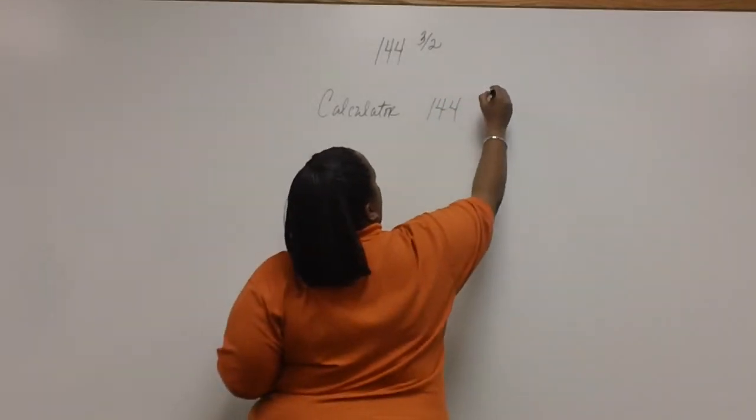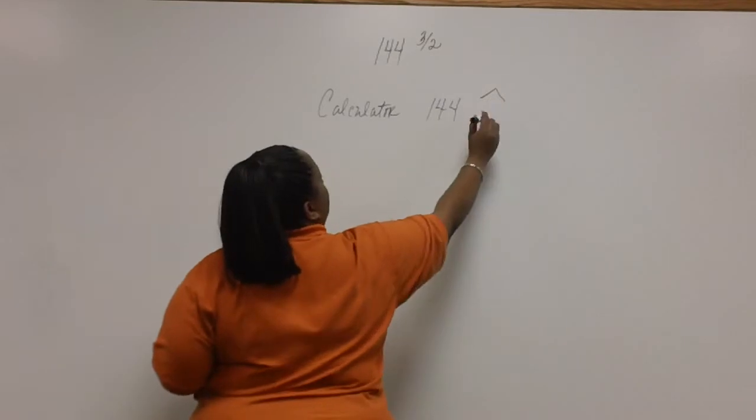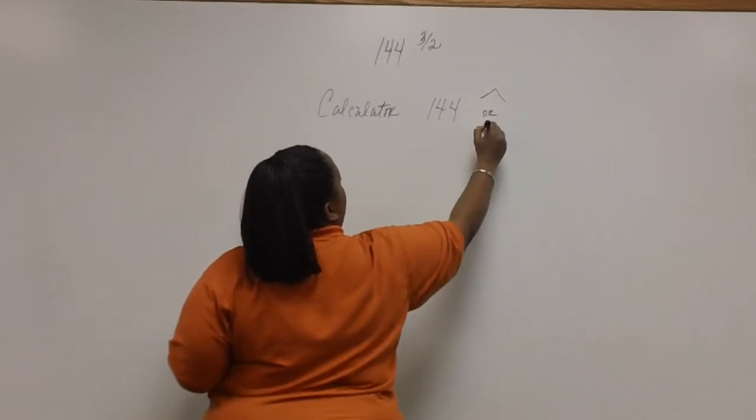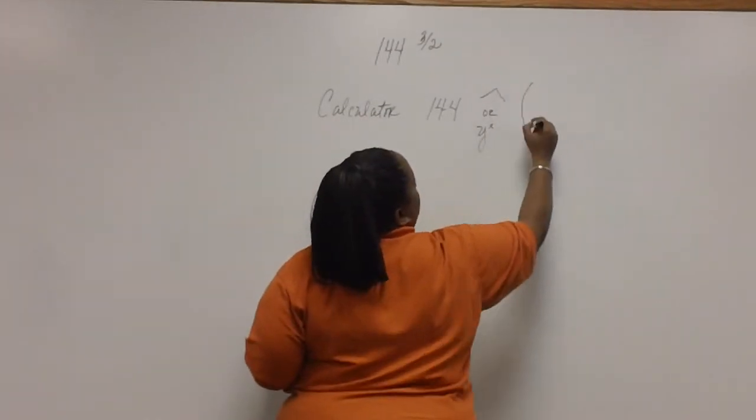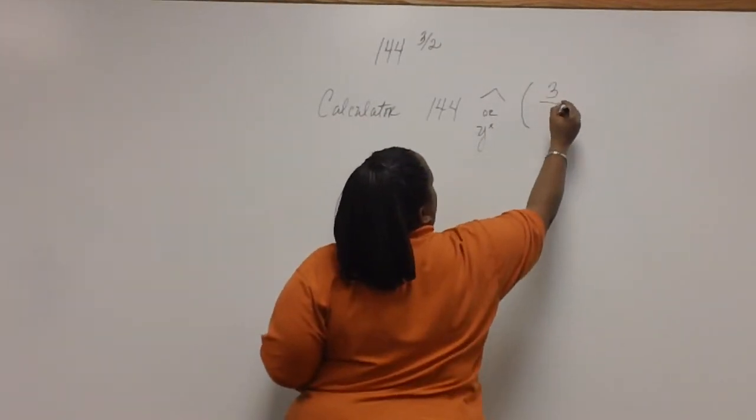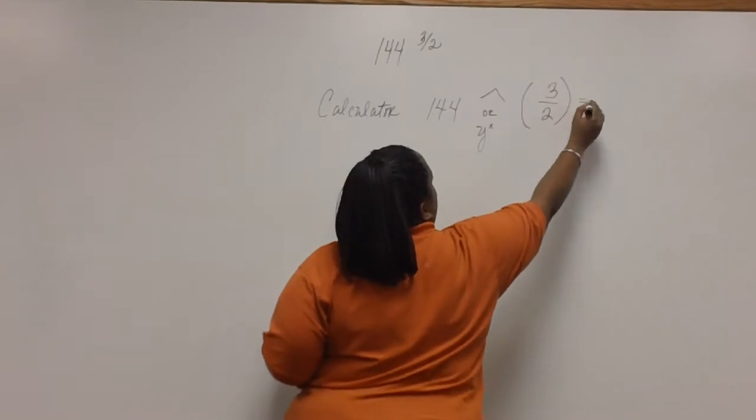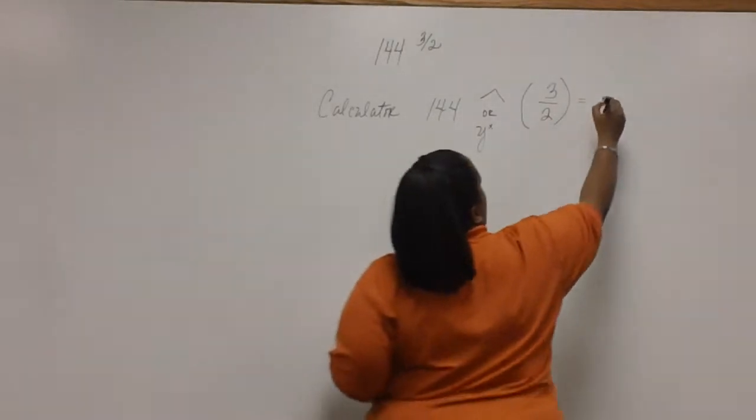and then get your exponent key, which looks like this, or like this, and then enter your exponent in parentheses. Three divided by two, close, and you should hit 1728.